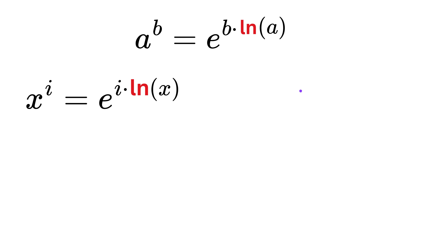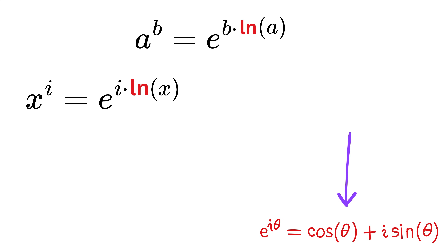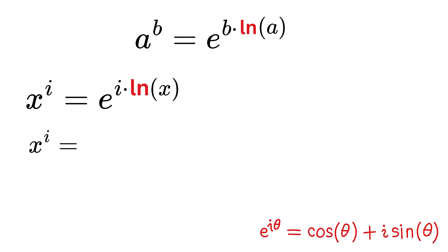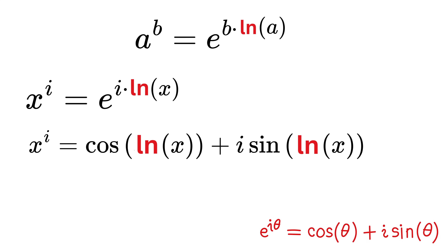Now we can use Euler's formula, which tells us that e raised to i theta equals cos theta plus i sine theta. Here, theta is the natural log of x. So x raised to i becomes this.